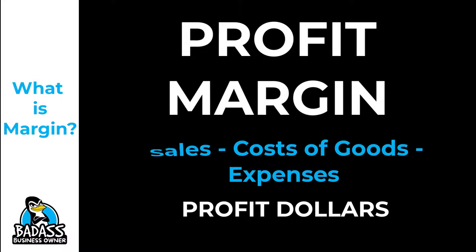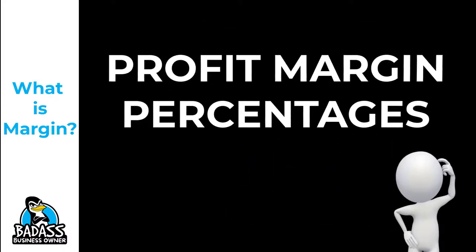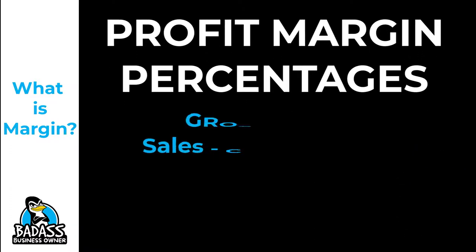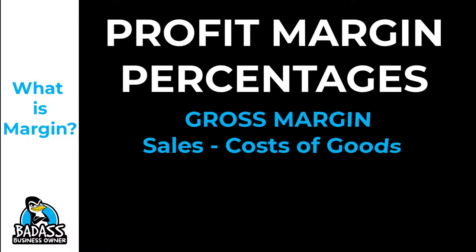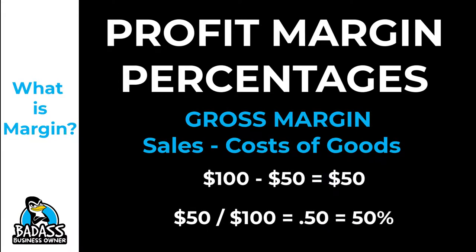Now we're talking dollars here, but you've also heard percentages. How do you figure out the percentage? Let's go back to the gross margin. Your gross margin is sales minus cost of goods, which gives you profit dollars. If you take those profit dollars and divide them by sales, it gives you a percentage — that's your gross margin percentage.